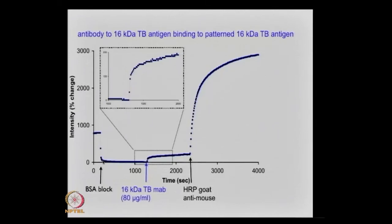The signal drops to zero because of the blocking — the BSA sticks in between the lines. Then at this point we introduce the 16 kilodalton antibody for TB that will bind to the antigen. You can see there's a little blip here. Let me expand this area — that blip is actually real because the signal-to-noise is good enough.